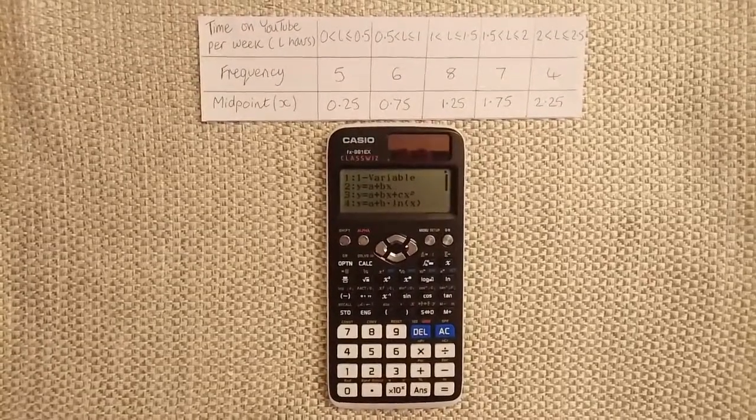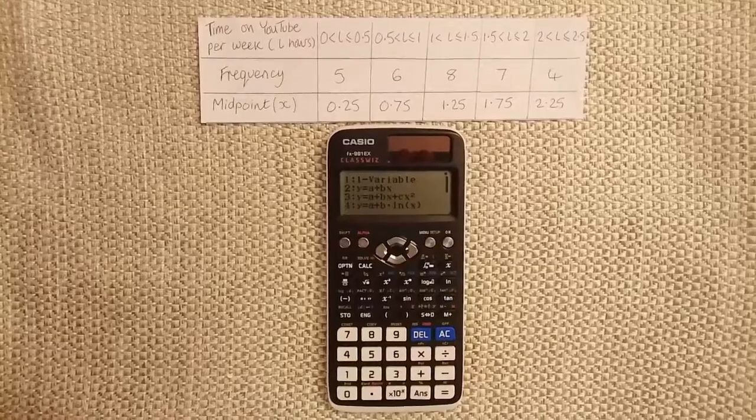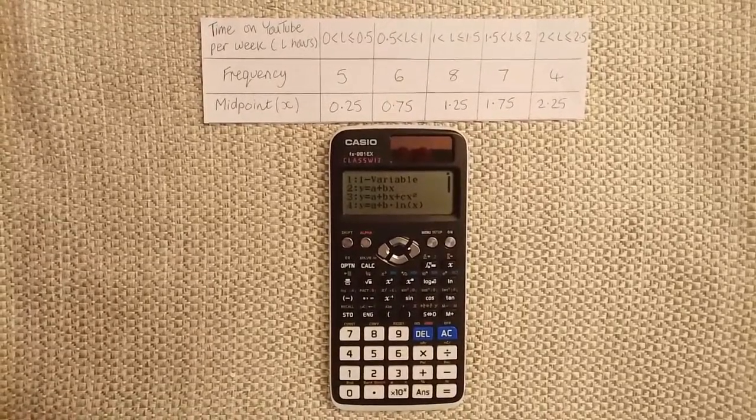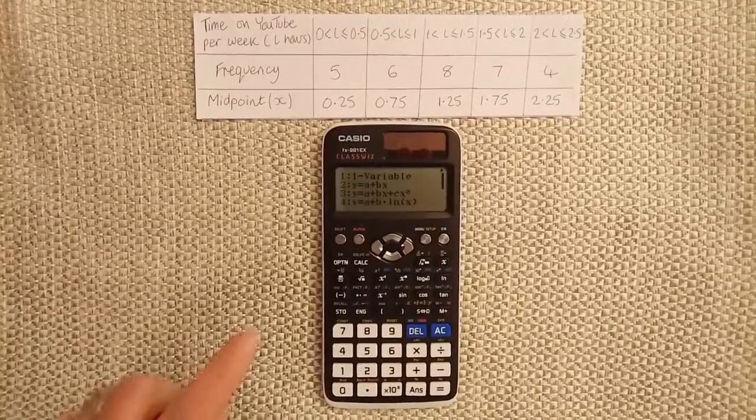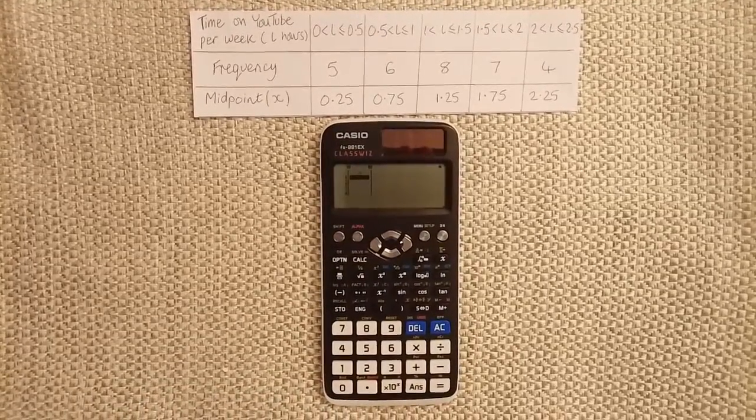The table shows a single variable, which is time on YouTube per week, so press 1 to choose single variable.